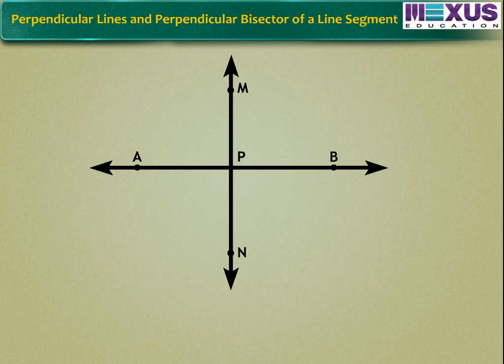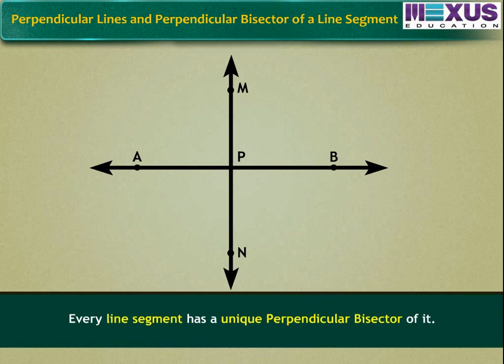Similarly, if one line segment is perpendicular and passing through the midpoint of other line segment, then the first line segment is called the perpendicular bisector of other line segment. Also, every line segment has a unique perpendicular bisector of it.